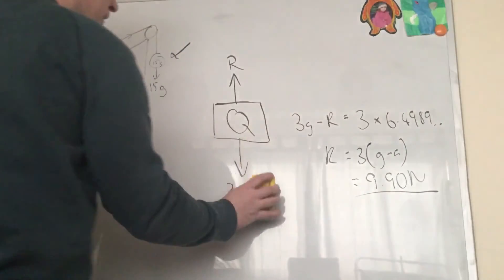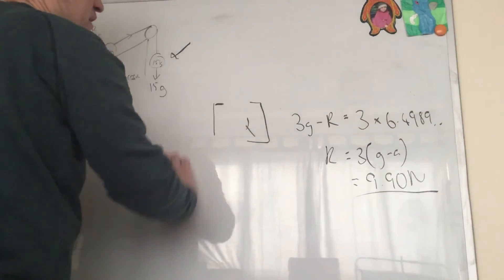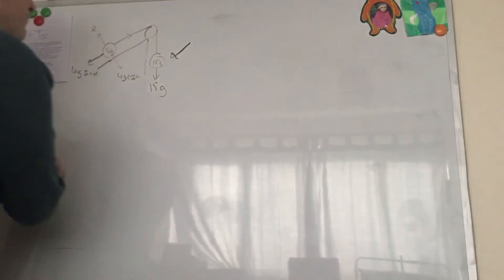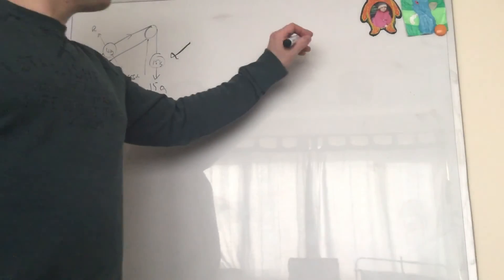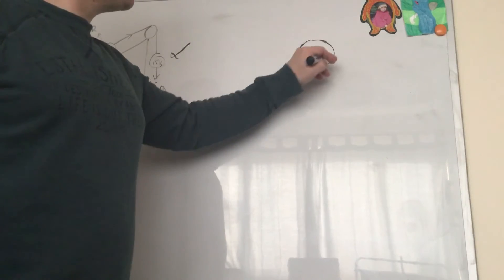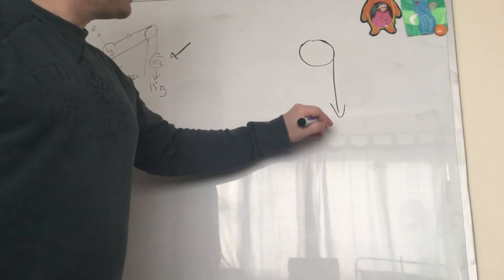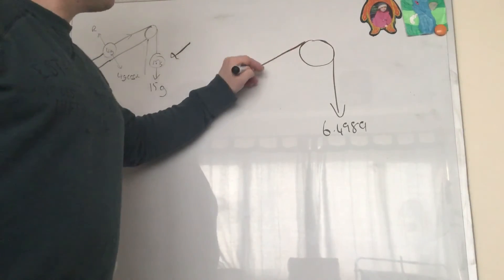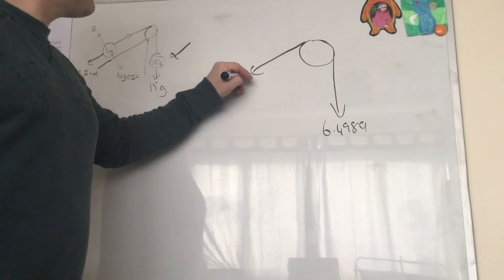Right, and finally D. I did a video going through D but I got the tension wrong. So I'm just going to give one with the right answer for tension. So we look at our pulley here, we've got a tension pulling down on it, so that's 6.4989, and we've got a tension pulling in that direction, 6.4989.